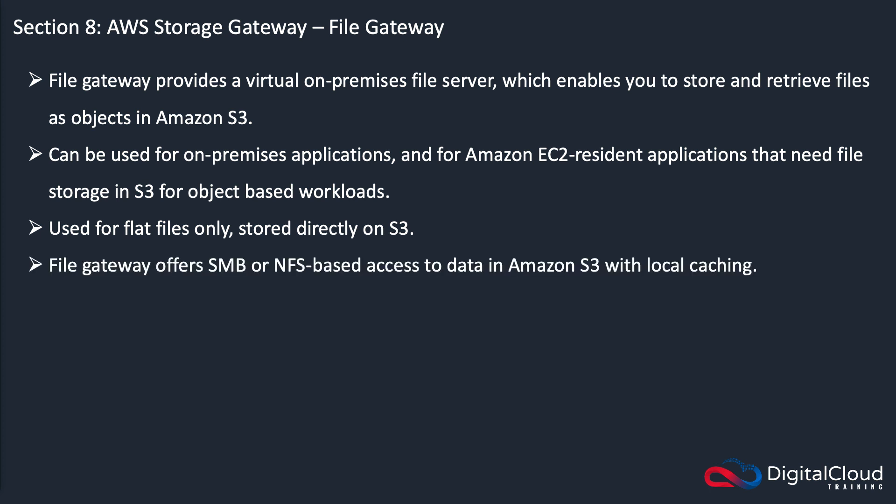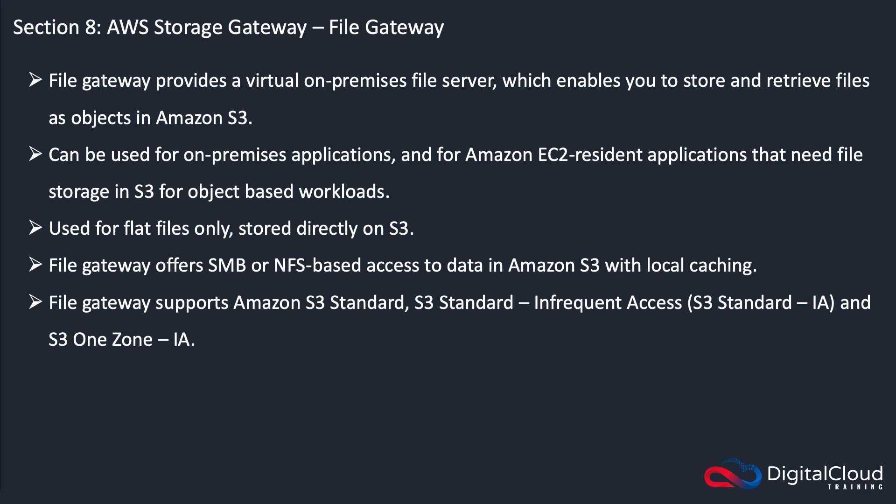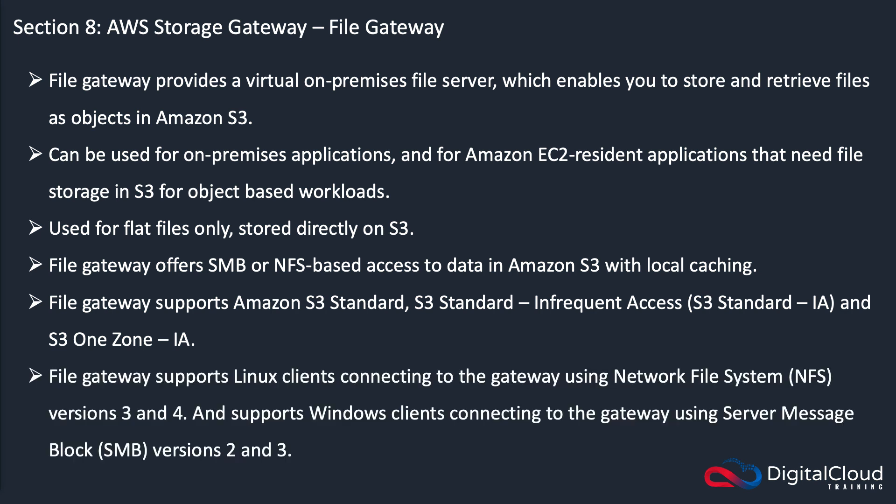File Gateway offers SMB or NFS-based access to data in S3 with local caching, and supports S3 Standard, Standard IA, and One Zone IA storage classes. It supports Linux clients connecting using NFS versions 3 and 4, and Windows clients connecting using SMB versions 2 and 3. The maximum file size for an individual file is five terabytes — that's the S3 limit.